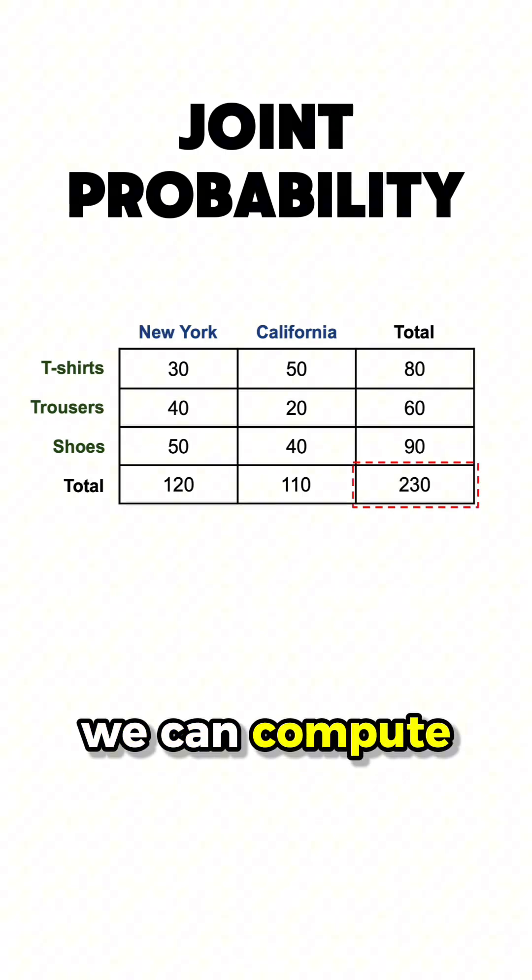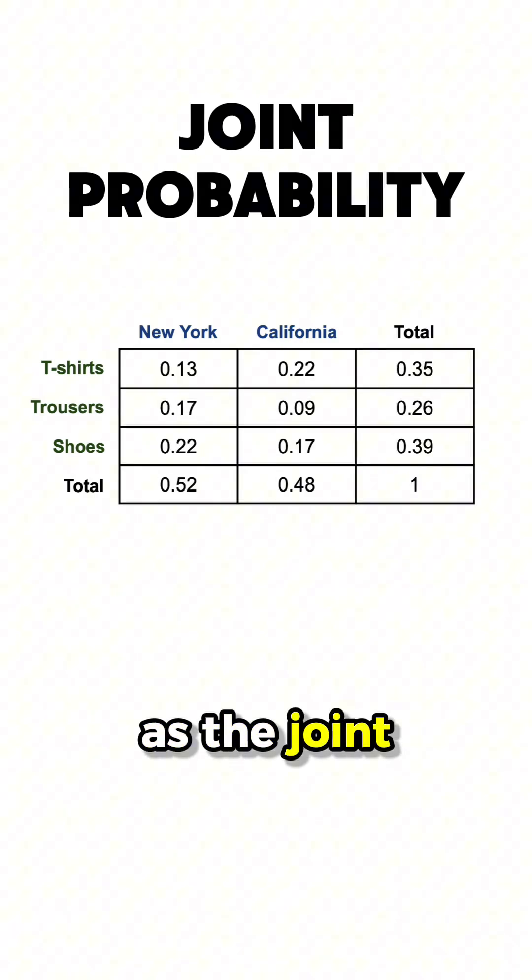Finally, we can compute the total number of clothes sold at all locations, and if we divide by this number, we get the probabilities of selling a specific piece of clothing at a specific location, which is known as the joint probability.